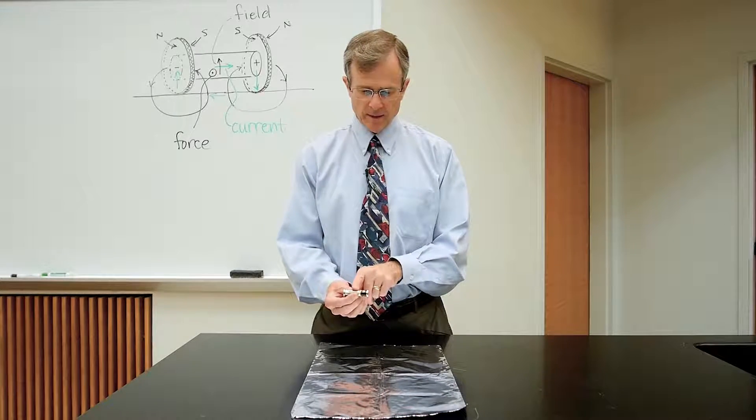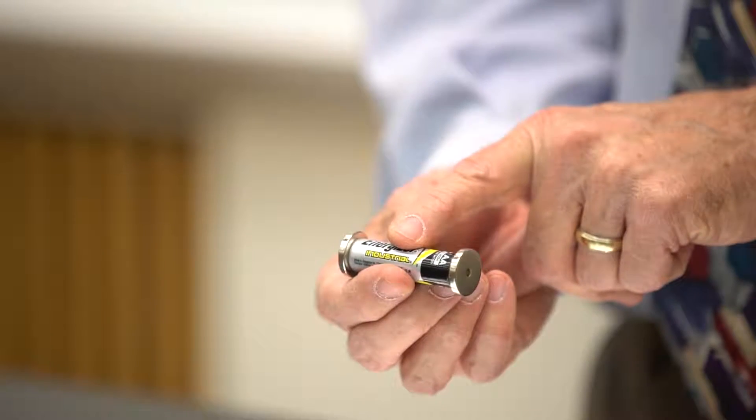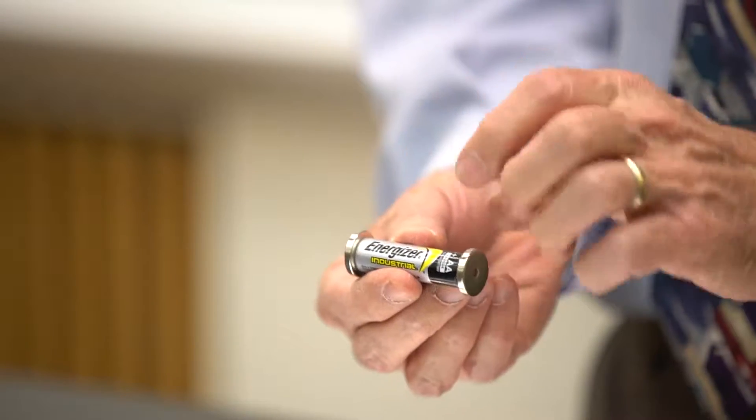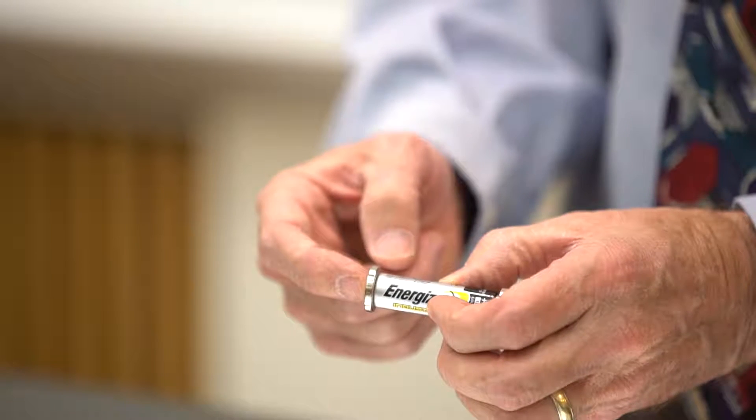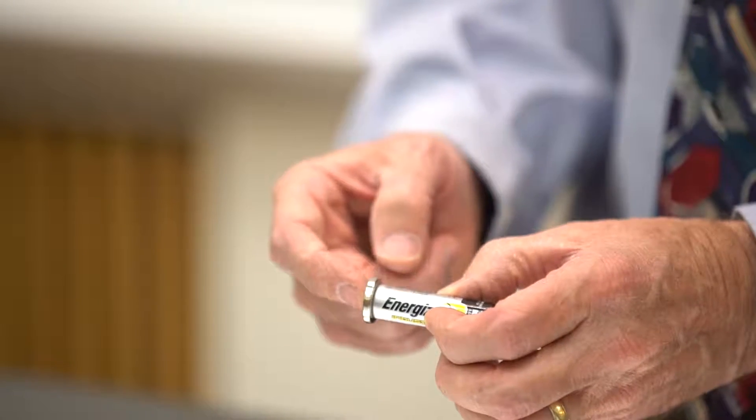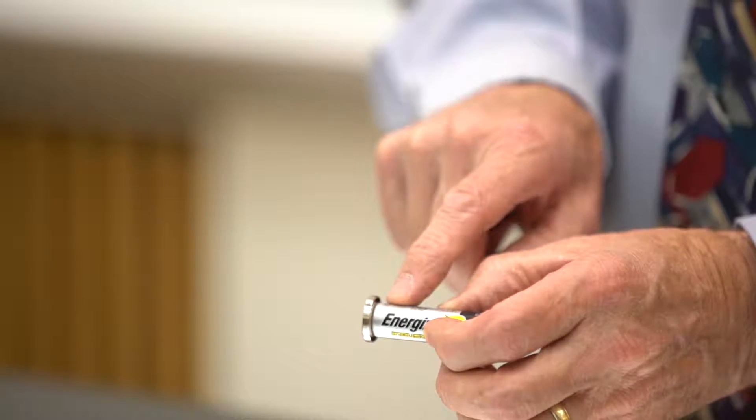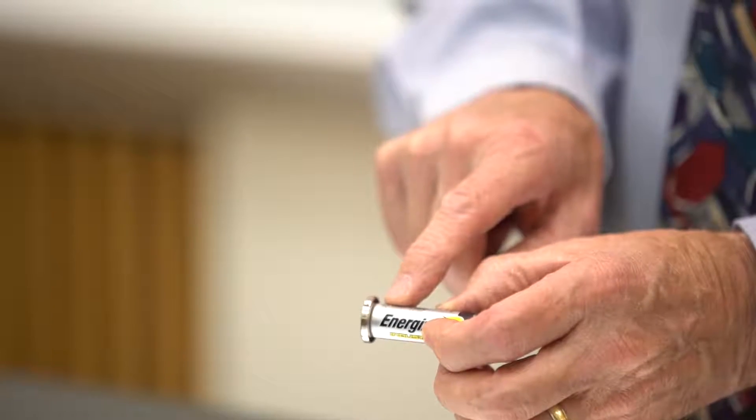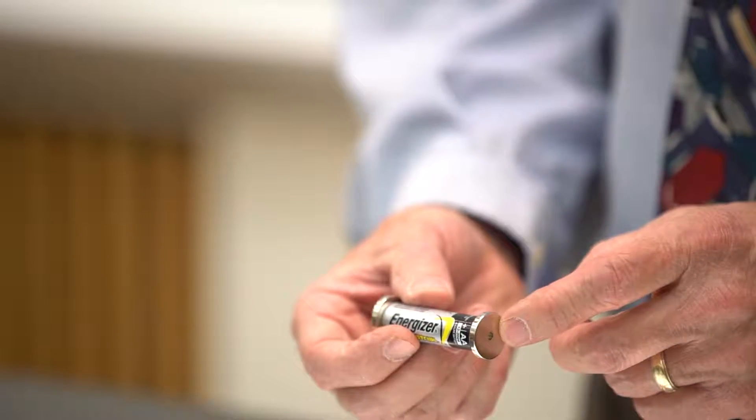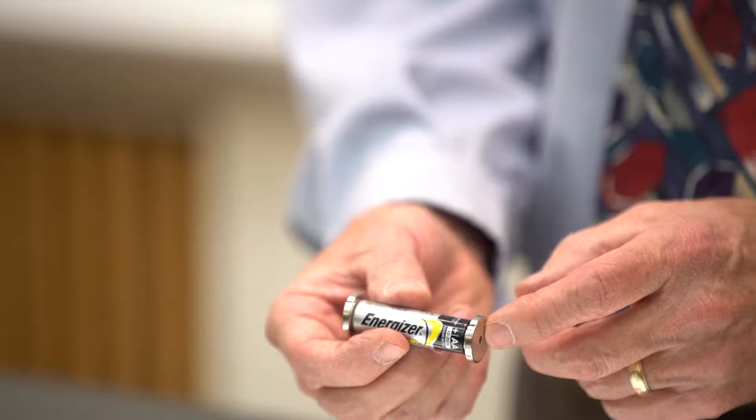It's got a battery in the middle. It's got a magnet with the north pole on this side and the south pole on the side that's contacting the battery. Then it's got another magnet. These are rare-earth neodymium magnets.